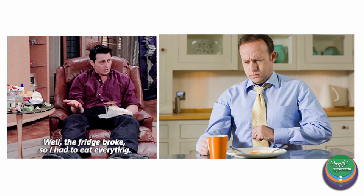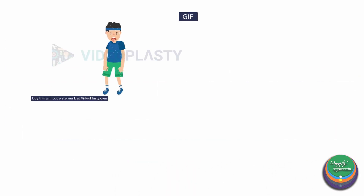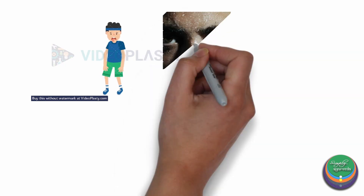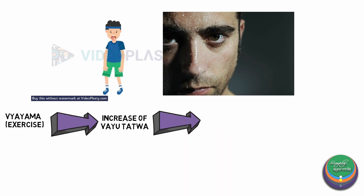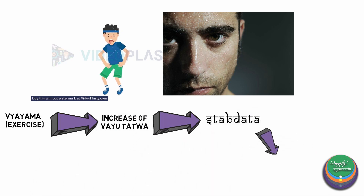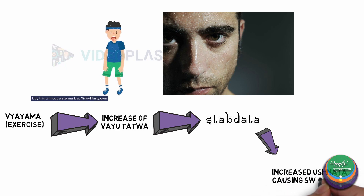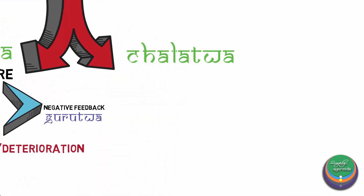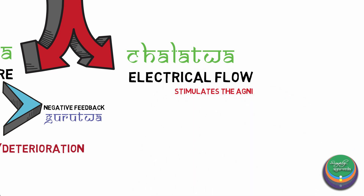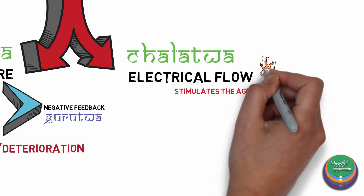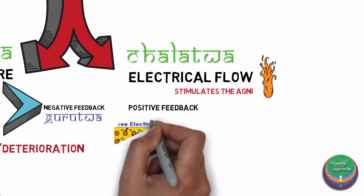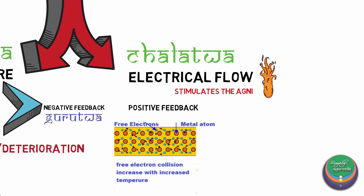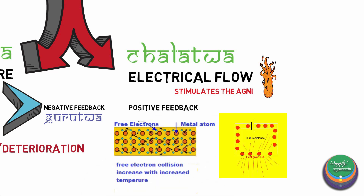It is also the reason why it is advised to stop Vyayama once you start sweating, because due to Vyayama, Vayu Tattva in the Sharira is increased. This causes an increase in Stabdata and also Ushnata, causing Svedana or sweating. The second mechanism is by virtue of Chalatva, which is a neural electrical flow that stimulates the Agni. This is a positive feedback mechanism. The electrical flow is also met with resistance, causing the generation of thermal energy or Ushnata Agni.